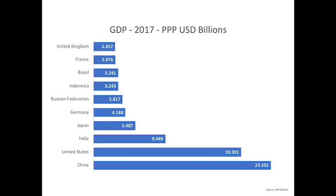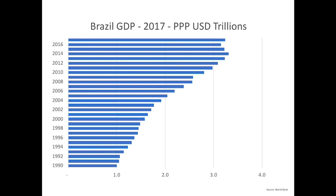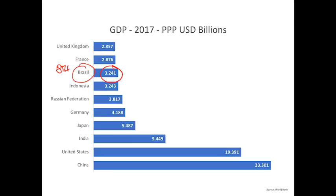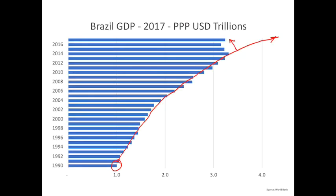Brazil is the eighth largest economy in the world with 3.3 trillion dollars in GDP according to the World Bank. GDP was around one trillion dollars in 1990 and grew steadily, but the recession caused it to stagnate. Had we continued the trend, we could have reached over four trillion dollars and possibly jumped from eighth to fifth position as the world's largest economy — that opportunity is now gone.